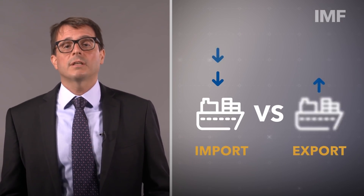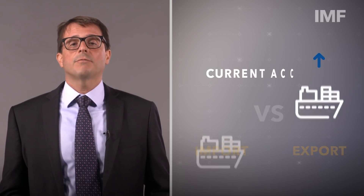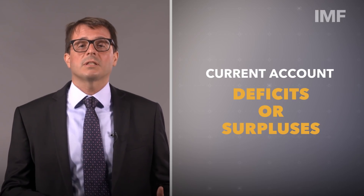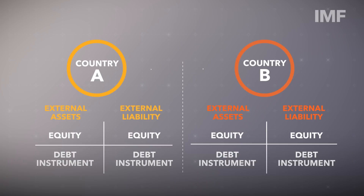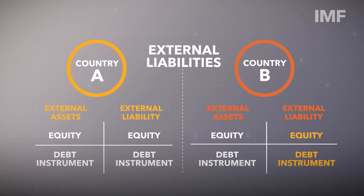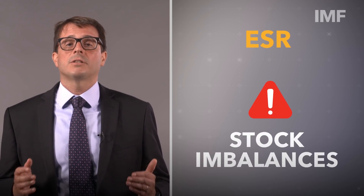Every year, the IMF publishes something called the External Sector Report, which looks at two key indicators important to global economic stability. The first is a measure of how much countries are importing versus how much they export — that margin of difference creates either current account deficits or surpluses. The second thing we review is changes in the level of external assets, which is how much a country owns in other countries compared to how much it's owed by other countries — that's called its external liabilities. This year, as part of the External Sector Report, or ESR, we're highlighting the risks from historically high stock imbalances.